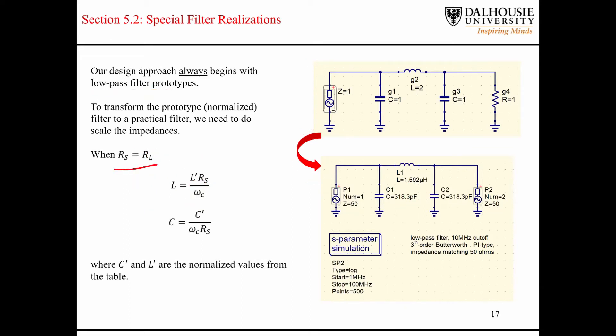We're working off the assumption that the load and source resistances are equal to each other — we're going to be using 50 ohms. What I'm calling impedance transformations — technically this isn't an impedance, it's an inductance and capacitance value — but regardless, these are the transformations that I'm referring to.